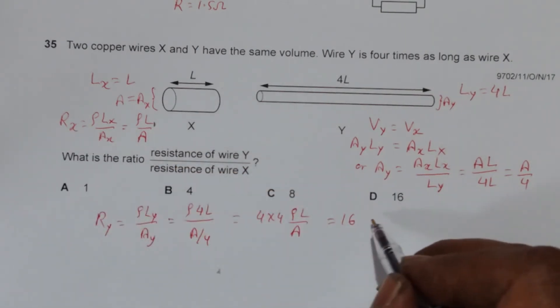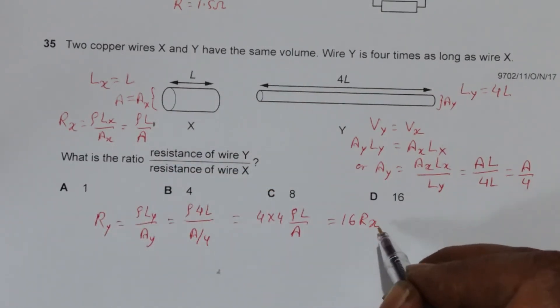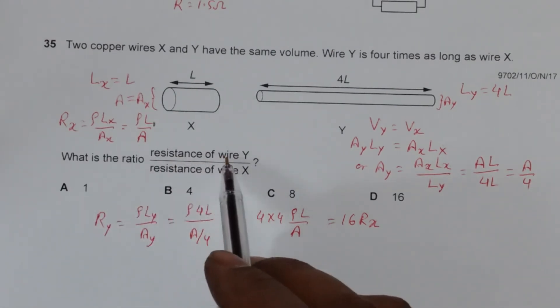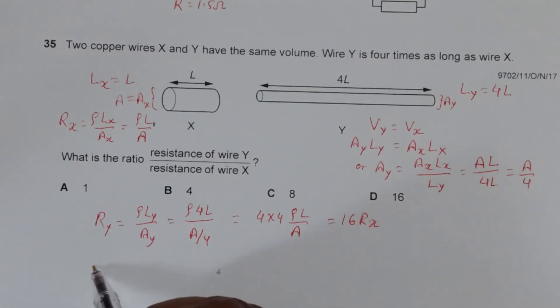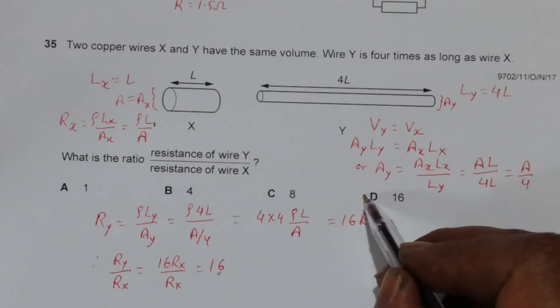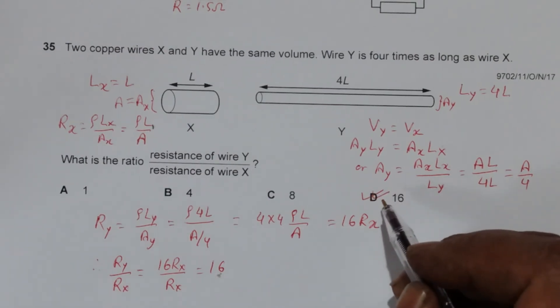Now the question asks for resistance of wire Y by resistance of wire X. So we have R_Y/R_X equals 16R_X/R_X, which equals 16. So the answer, choice D, is the correct one.